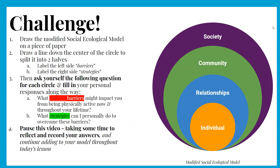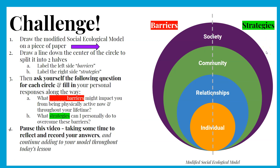Our challenge for today is to draw the modified social ecological model on a piece of paper. Then draw a line down the center of the circle to split it into two halves. Label the left side barriers, the right side strategies. Then ask yourself the following question for each circle and fill in your personal responses: what individual barriers might impact you from being physically active now and throughout your lifetime? And what strategies can I personally do to overcome these barriers? You can pause this video and take some time to reflect and record your answers, then continue adding to your model as we reflect together.